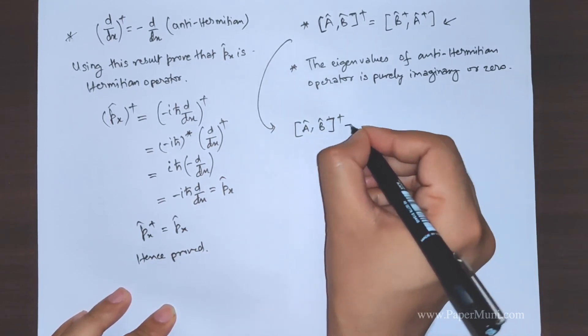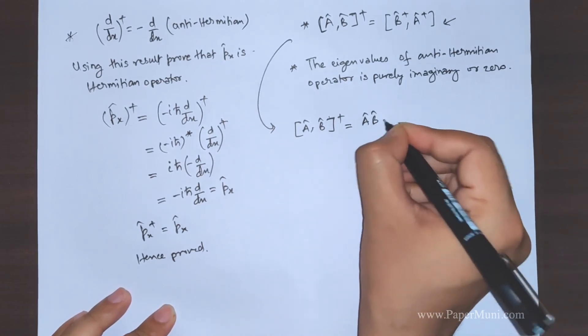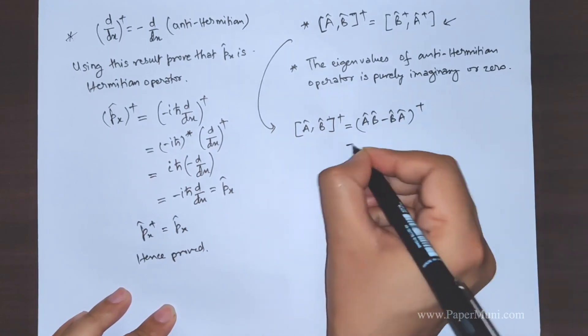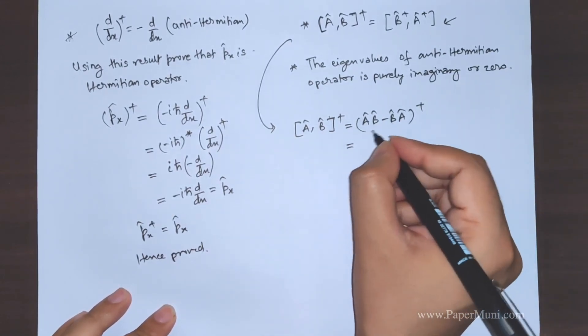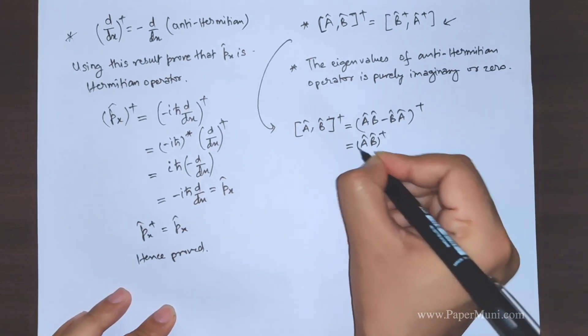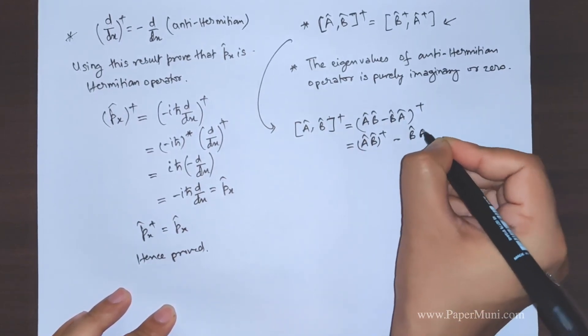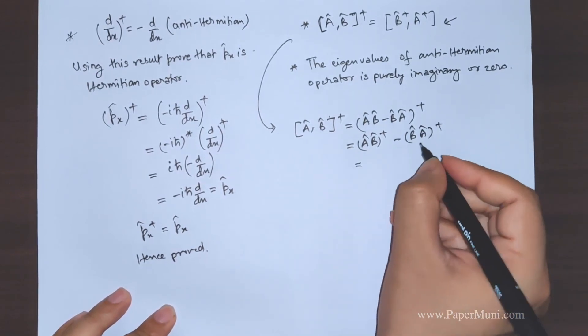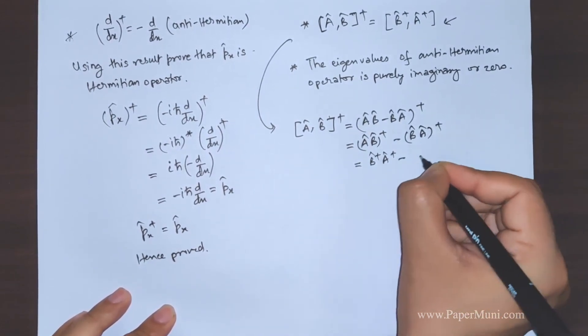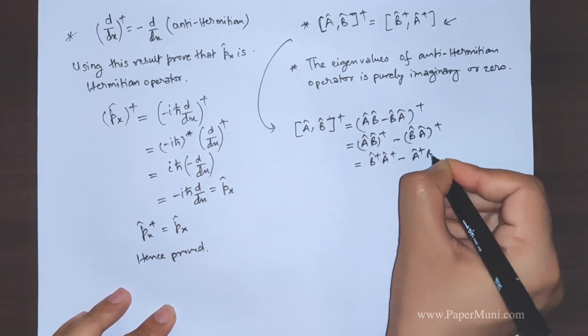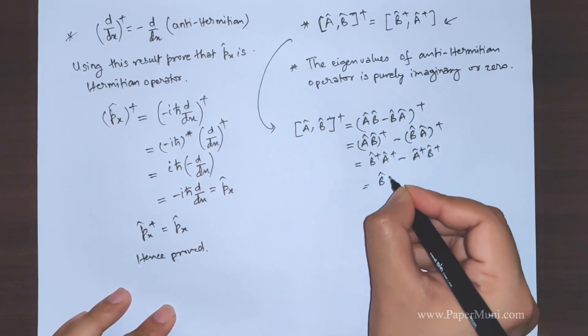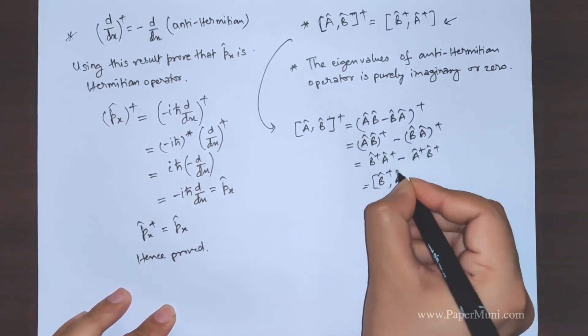If you apply a dagger, so we expand the commutator and place the dagger. We take the hermitian adjoint of all the terms, we get this is b dagger a dagger minus this is a dagger b dagger, which is basically the commutator of b dagger a dagger.